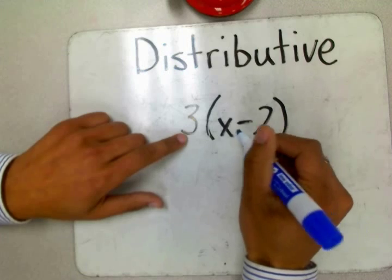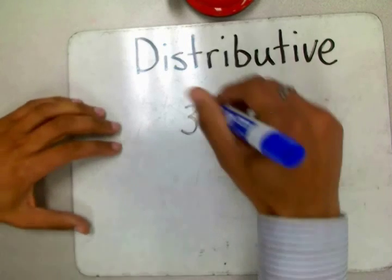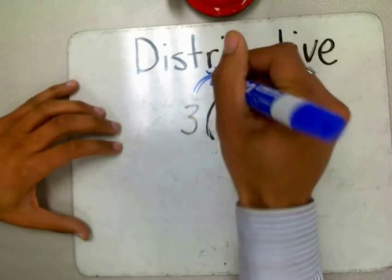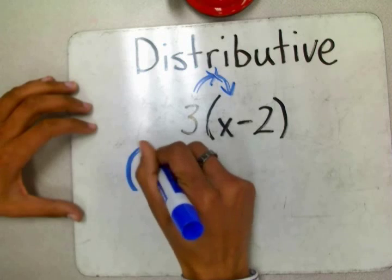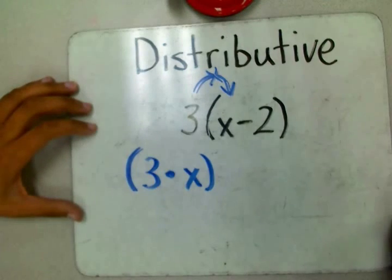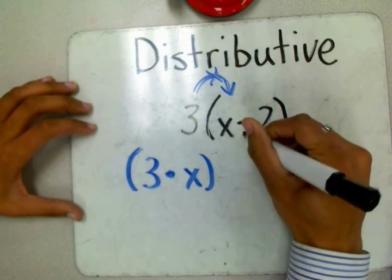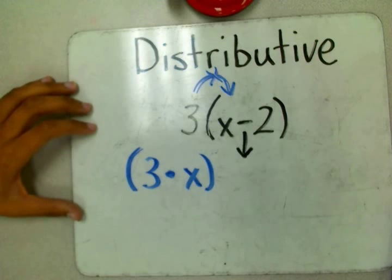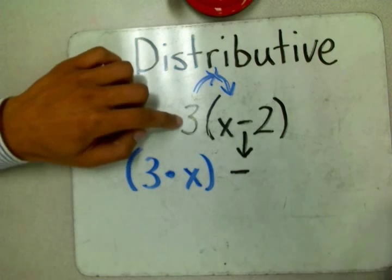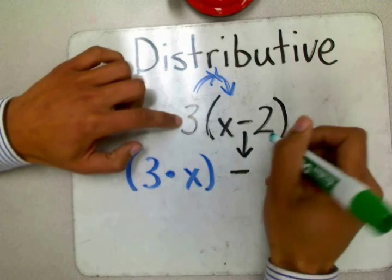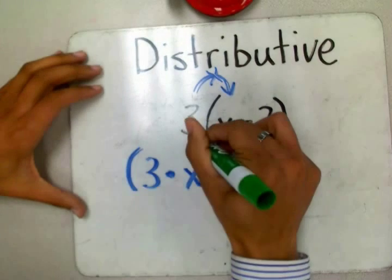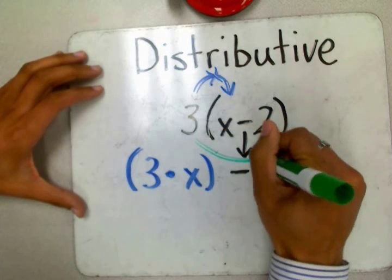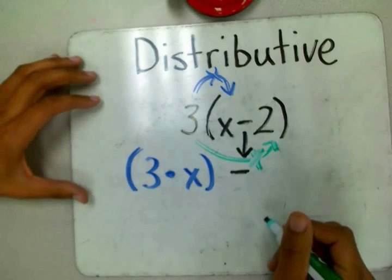So here we have it: 3 times X. Open parenthesis 3 times X close parenthesis. I bring down the sign inside the parenthesis - that's minus, subtract. And then I continue on. I need to multiply this factor 3 by the other number inside the parenthesis. 3 times 2. Open parenthesis 3 times 2 close parenthesis.